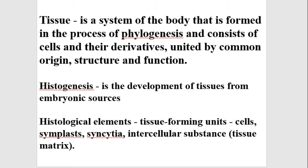Let us discuss each element of the tissue one by one. Cells are the main element of all tissues, determining their basic properties. As introduced in the first lesson of histology, a cell is an elemental biological system composed of three main elements: the nucleus, cytolemma, and cytoplasm.